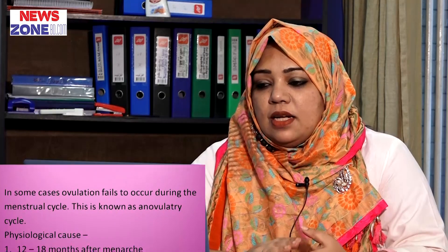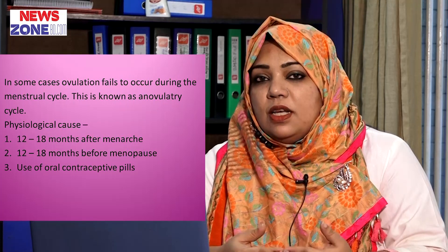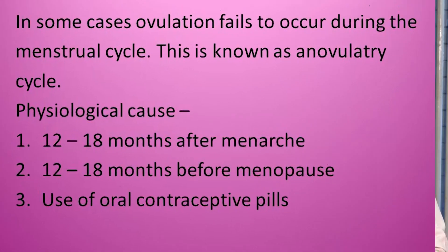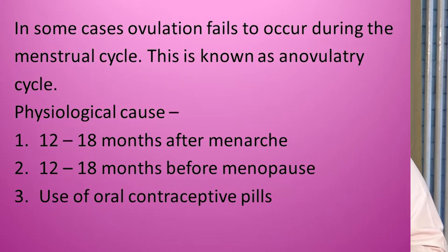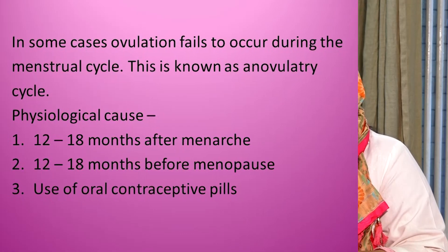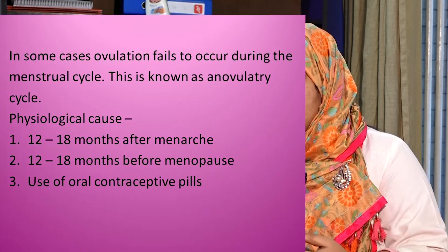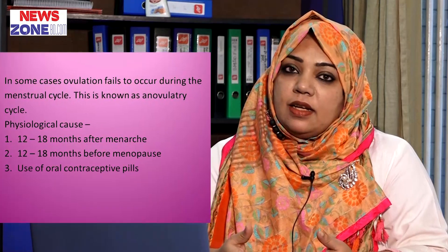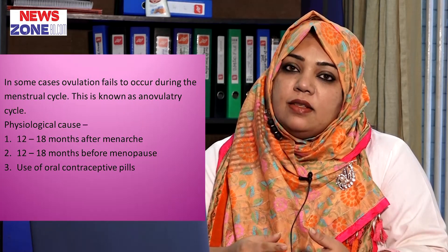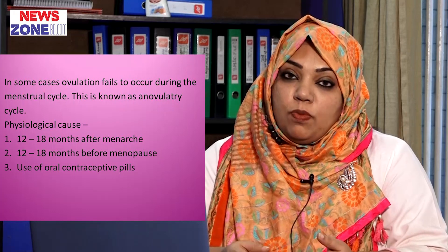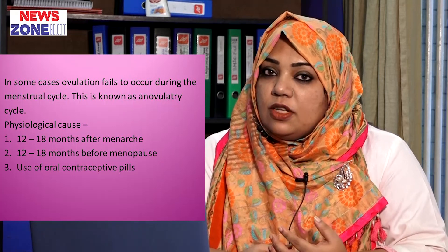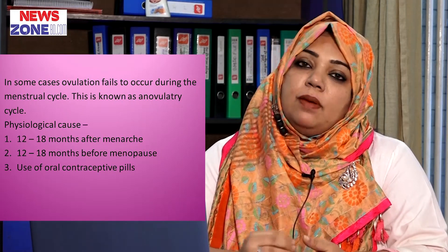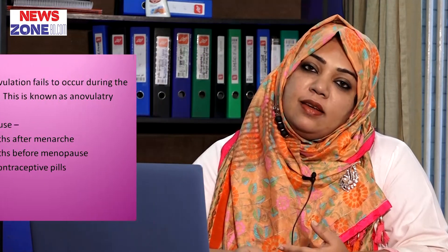In some cases, ovulation fails to occur during the normal menstrual cycle. These cycles are known as anovulatory cycles. The physiological causes include: during menarche — the onset of the first menstruation — 12 to 18 months after menarche, the female may have anovulatory cycles. Before menopause — the natural and permanent cessation of menstruation — 12 to 18 months before menopause, there may be anovulatory menstrual cycles. And if a person uses oral contraceptive pills, the menstrual cycles are anovulatory.